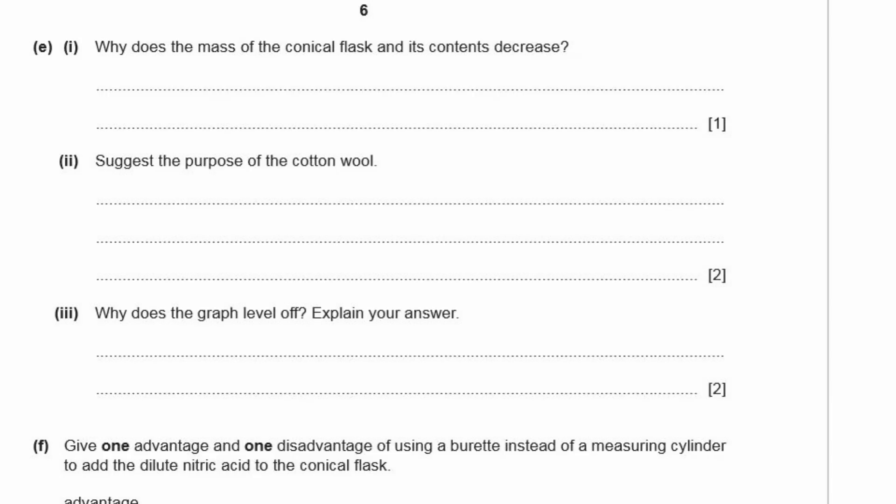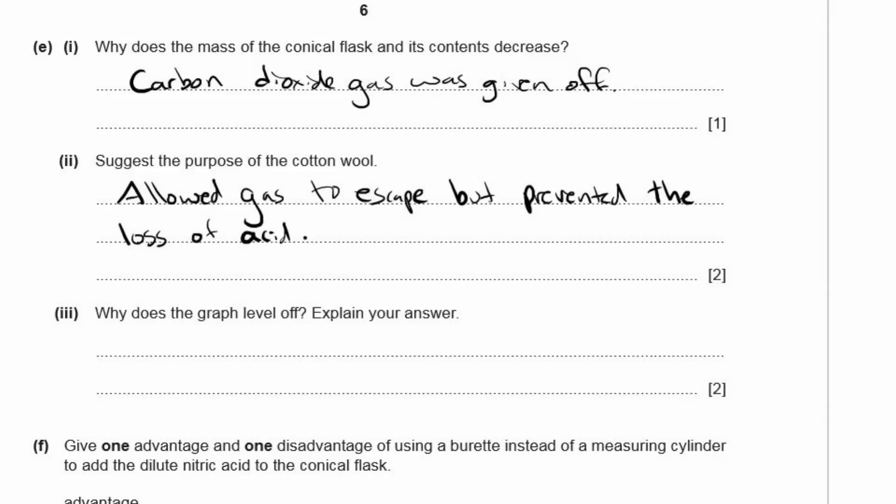E1. Why does the mass of the conical flask and its contents decrease? The reason why it decreases is because the reaction produces a gas and gases can escape, but they also have a mass. So the reason why it decreases is because carbon dioxide gas was given off. And two, suggest the purpose of the cotton wool. The cotton wool allows the gas to escape, but doesn't let any bubbles of acid escape. So it allowed the gas to escape, but prevented the loss of acid. Three, why does the graph level off? Explain your answer. The reason why it leveled off is because all of the nitric acid was finished reacting. So basically that meant the reaction is complete. So remember the magnesium carbonate was in excess. That means that it made sure that all of the nitric acid was going to react.